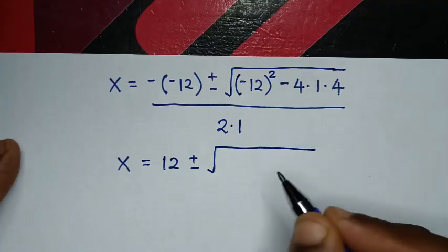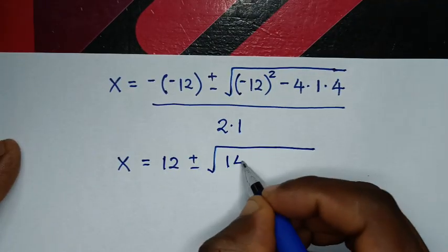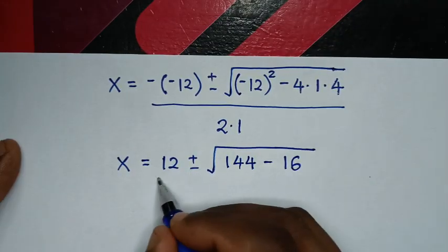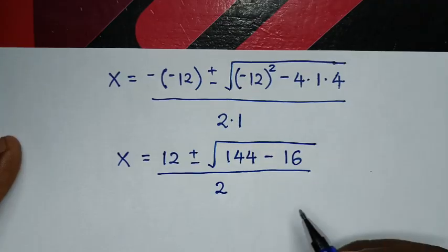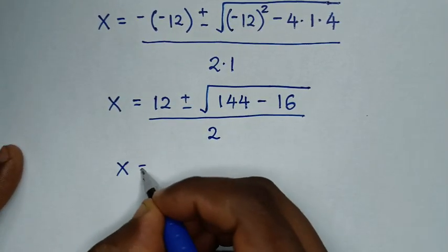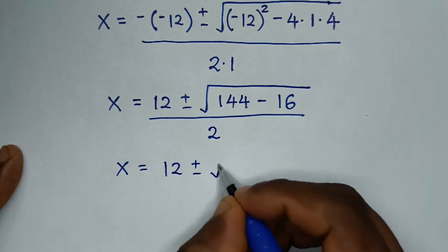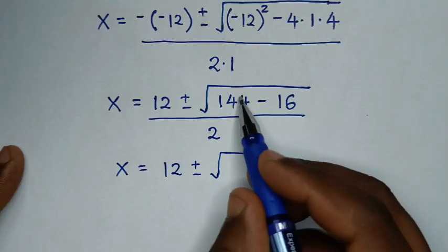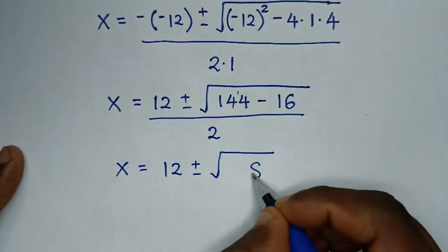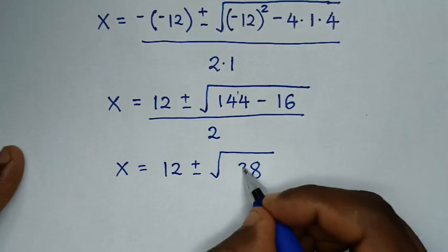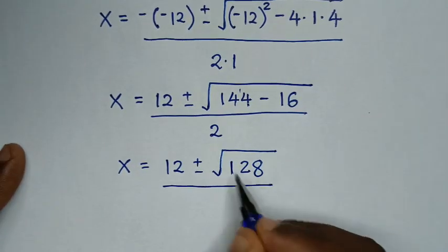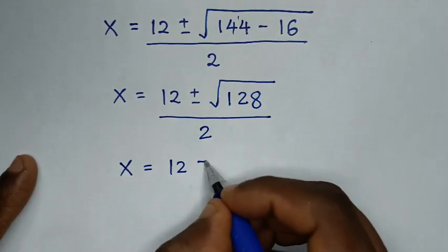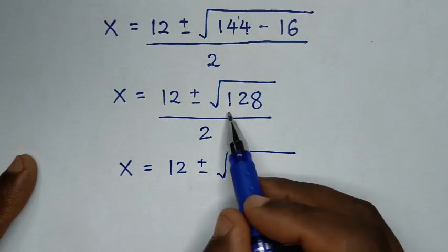Simplifying: x = (12 ± √(144 − 16)) / 2, which gives x = (12 ± √128) / 2.